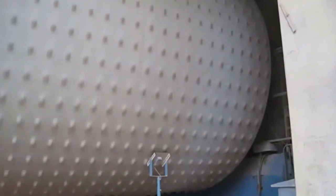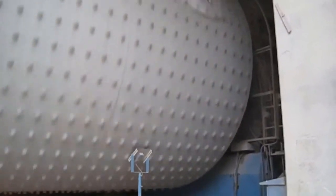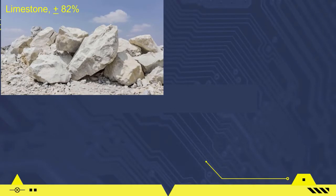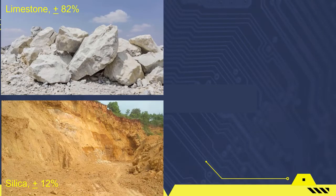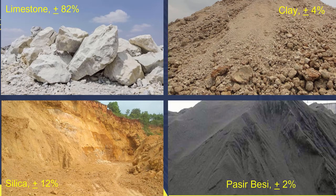Raw materials in the cement production process consist of four components, including: limestone at approximately 82%, silica at approximately 12%, clay at approximately 4%, and iron ore at approximately 2%.